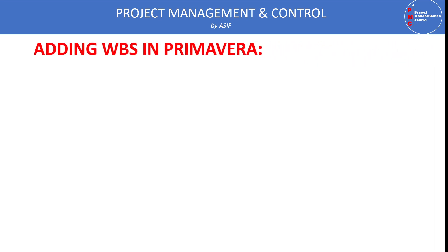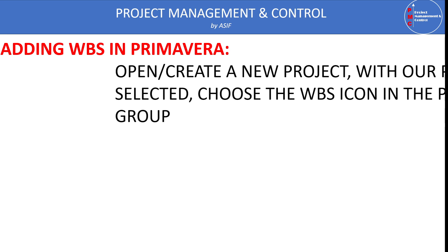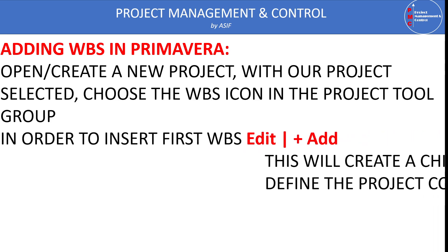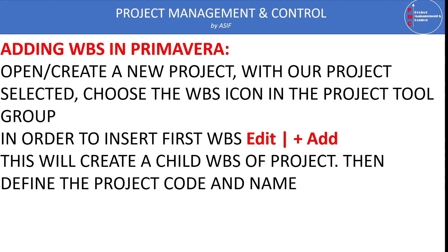Now we will see how we can add a WBS in Primavera P6. To add a WBS in Primavera P6, either we open an old project or create a new project. With the project selected, we choose the WBS icon in the project tool group. Primavera P6 offers four or five types of windows: the activity window, the project window, and the WBS window. I have already made a separate video for different layouts in Primavera P6 — please visit my channel and find that video.